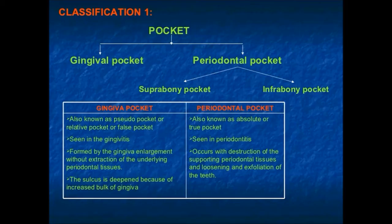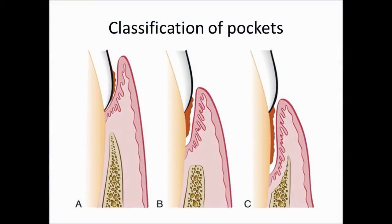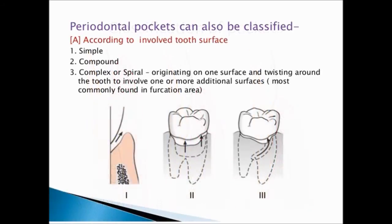The periodontal pocket involves the destruction of the periodontal ligaments. In the diagram: A is the gingival pocket, B is the supra-bony pocket. In the supra-bony pocket, the base of the pocket is coronal — it is above the underlying alveolar bone. In the infra-bony pocket, the base is apical to, or inferior to, the alveolar bone. The walls of the supra-bony pocket are formed by soft tissue, while the walls of the infra-bony pocket are formed by both soft tissue and bone.